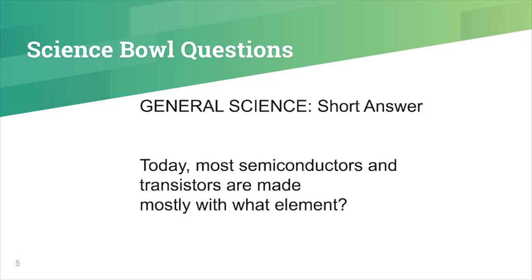General science, short answer: Today, most semiconductors and transistors are made mostly of what element? The answer is silicon.